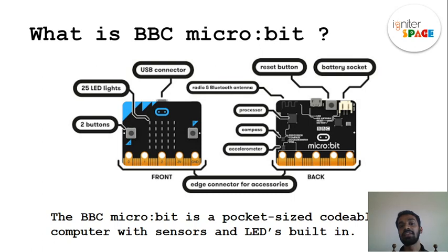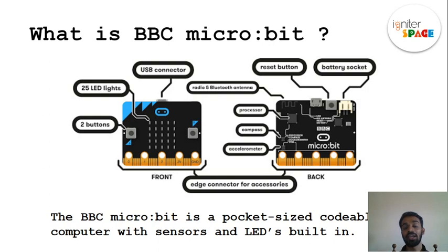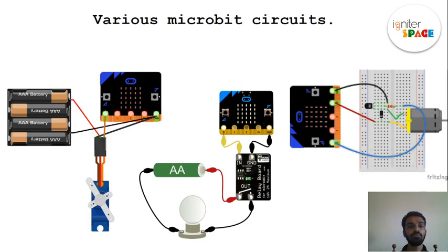There's also a battery socket. When the Micro:bit is not connected to a computer, the battery socket provides power and makes it portable — simply by connecting it to a battery pack.